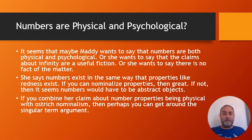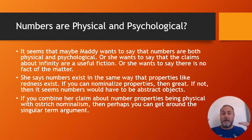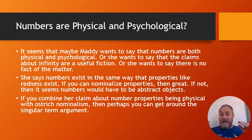Anyway, moving on — she says numbers exist, but in just the same way that properties like redness exist. So the problem of nominalizing numbers is the same problem as nominalizing properties. If you think you can't do that — if you believe the one-over-many argument — then numbers are going to be abstract objects, just like universals are. But if you're like Quine and think ostrich nominalism is a good approach, then it's just a brute fact that some things are red and it's a brute fact that some things are twos — the property of twoness.